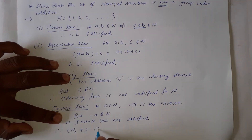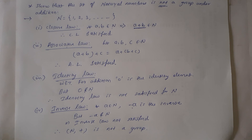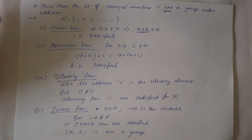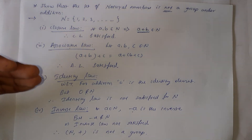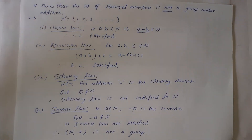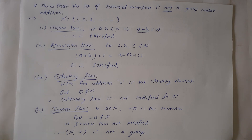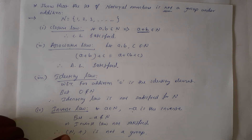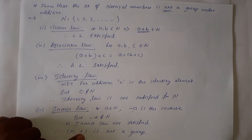Therefore, (N, +) is not a group, because it does not satisfy identity law and inverse law. If the question asks to show that the set of natural numbers is not a group, we verify closure, associative, identity, and inverse laws. If any one law is not satisfied, the given set is not a group under the respective binary operation. Here (N, +) is not a group under addition.